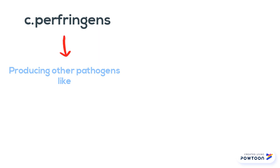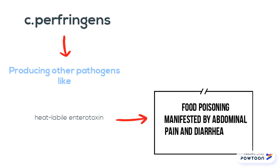Clostridium perfringens produces multiple other pathogenic toxins including heat labile enterotoxin, which causes clostridial food poisoning manifested by abdominal pain and diarrhea.